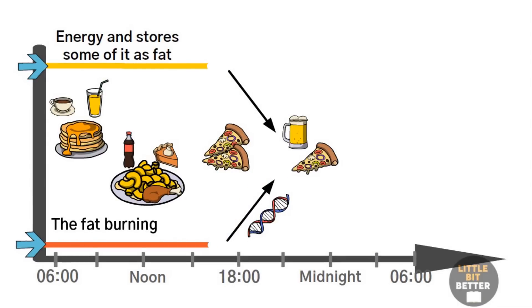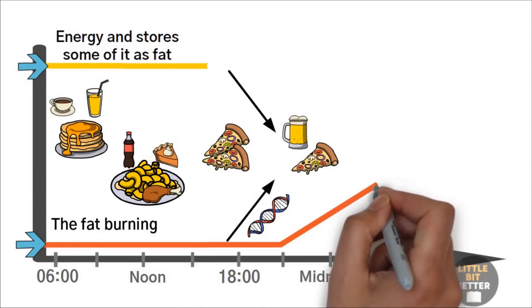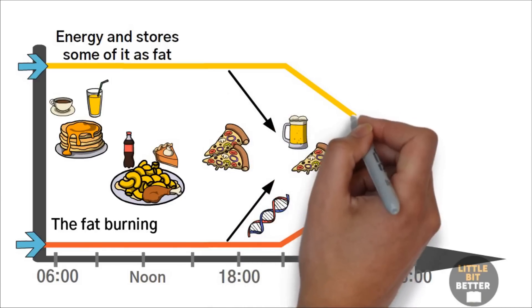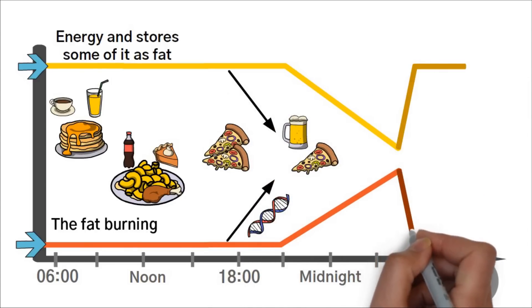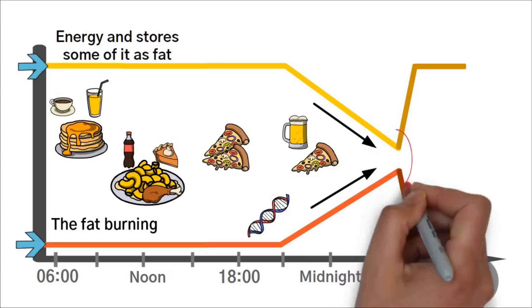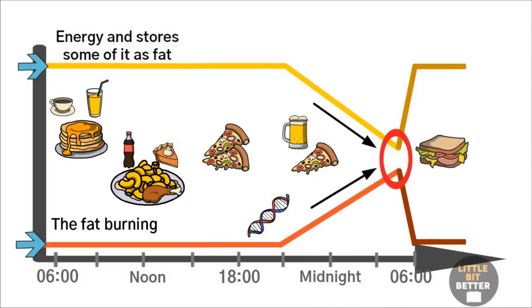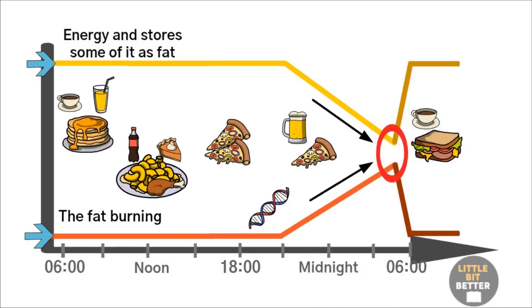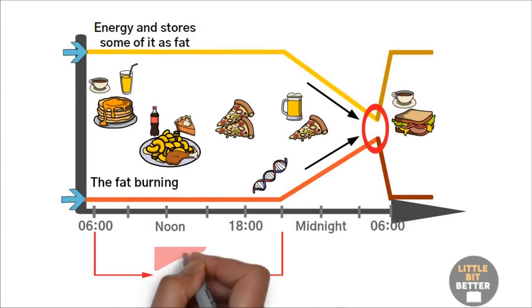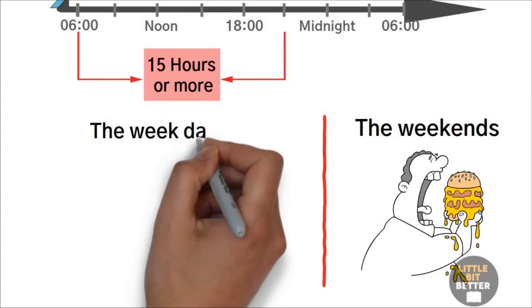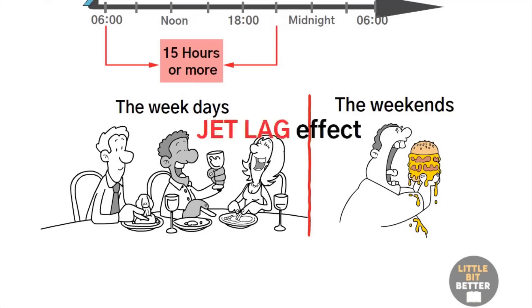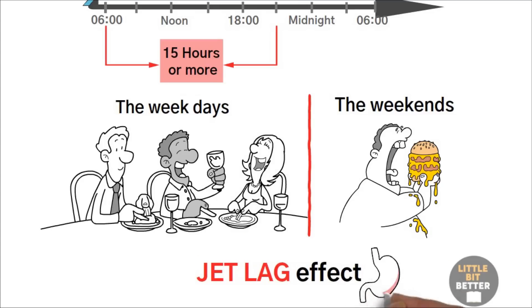But now, let us imagine you delay your last meal and eat quite late at night. As you can see from the graph, the fat storing process gets activated again when it shouldn't be and the fat burning and repair process gets deactivated when it should actually be active. For most people today, the eating period is 15 hours or more. Not just that, the eating period during the weekends is different from the weekdays. This creates a jet lag effect for your digestive organs.